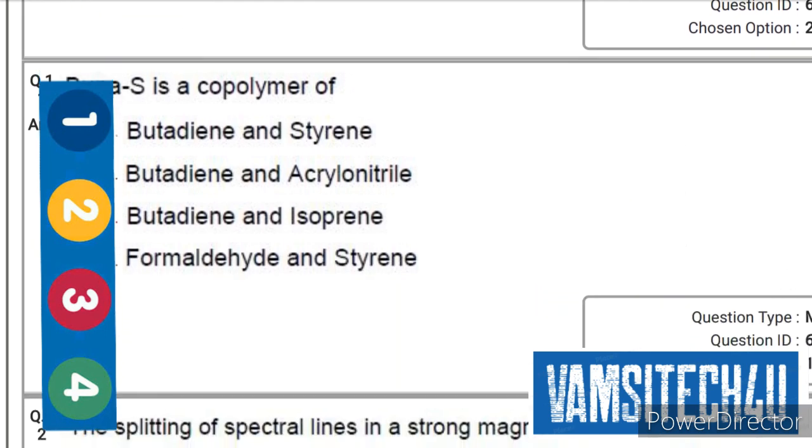Next question: Buna-S is a copolymer of... the right option is first one, that is butadiene and styrene.